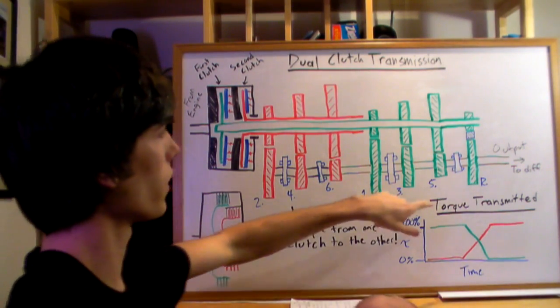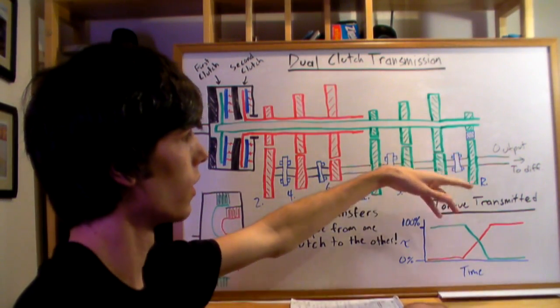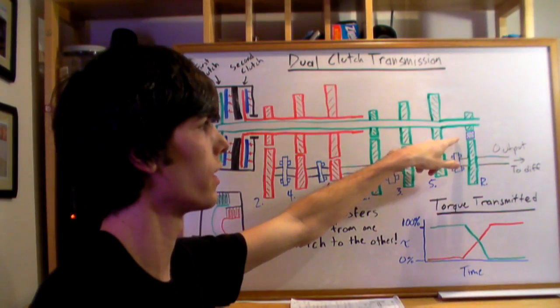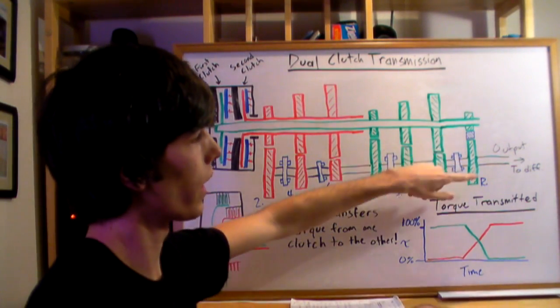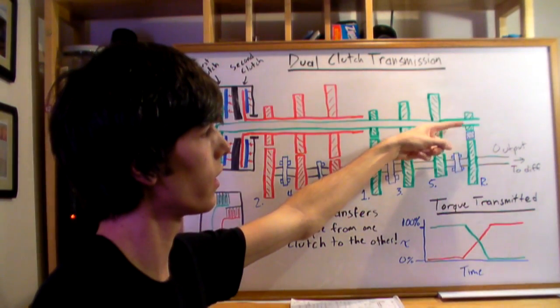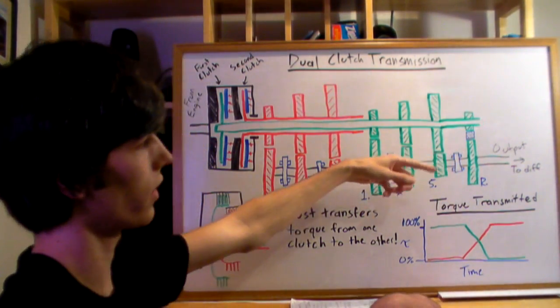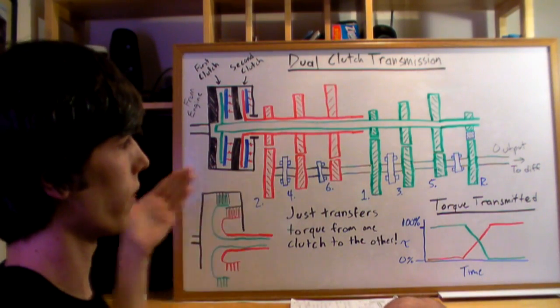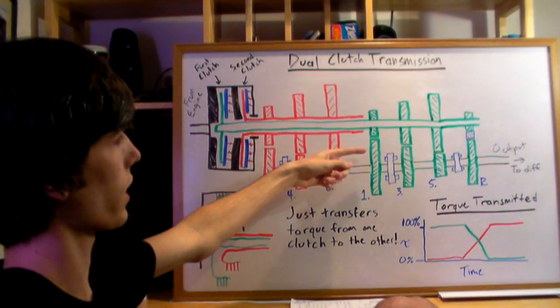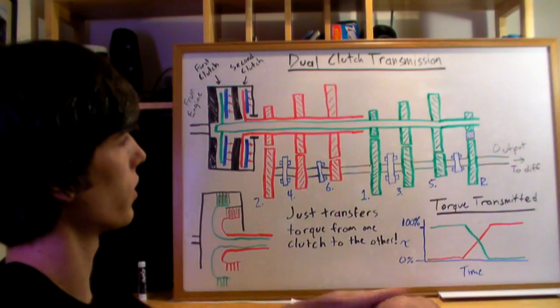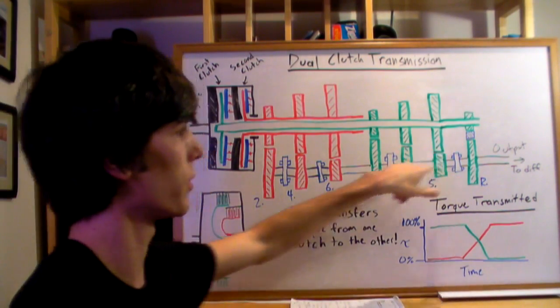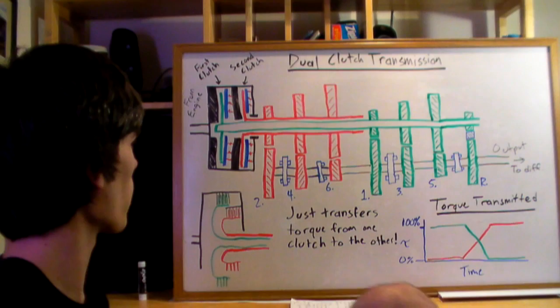Now for reverse it's pretty simple. I just drew a little idea here. You can just put in an idle gear and so what happens is as this rotates here it'll change direction there and then change direction back to the desired direction which would be reverse. Whereas all the other ones just have a direct connection, this one will be opposite of the rest of the gears so you can go backwards.